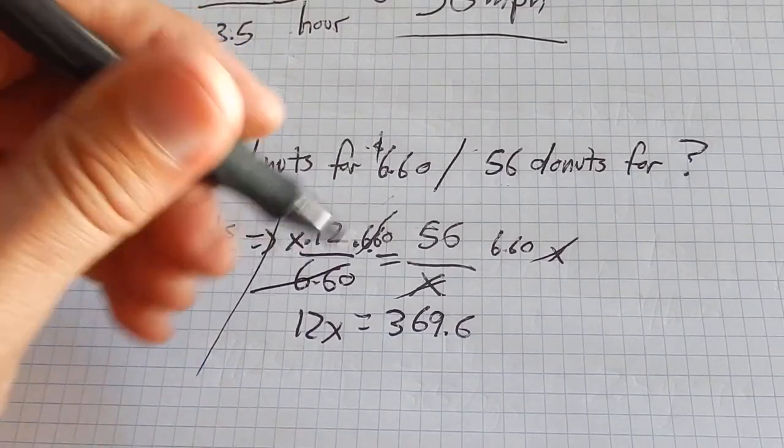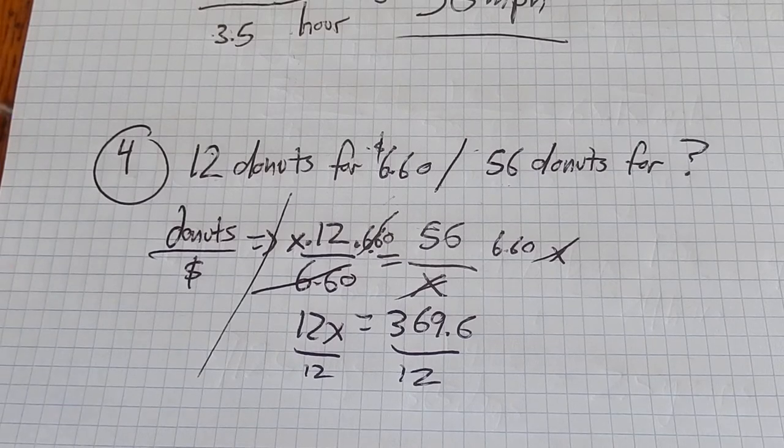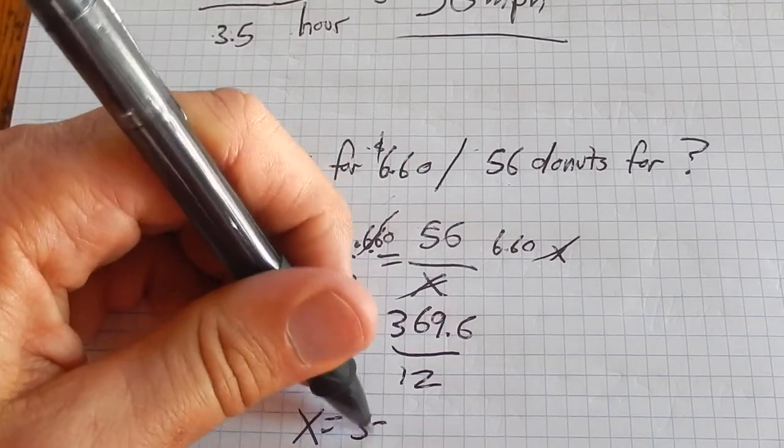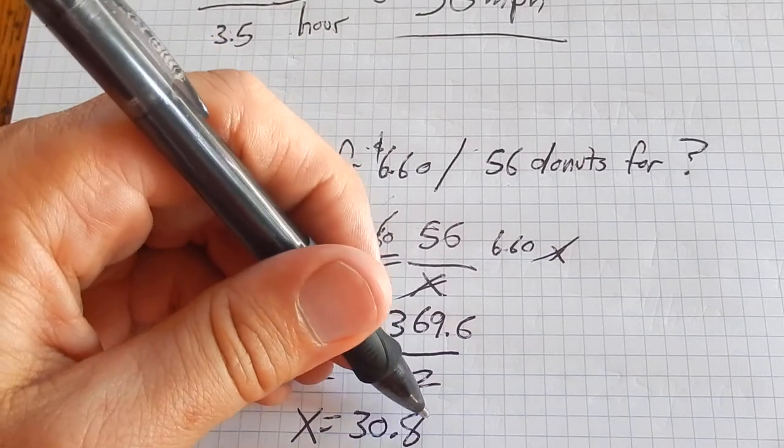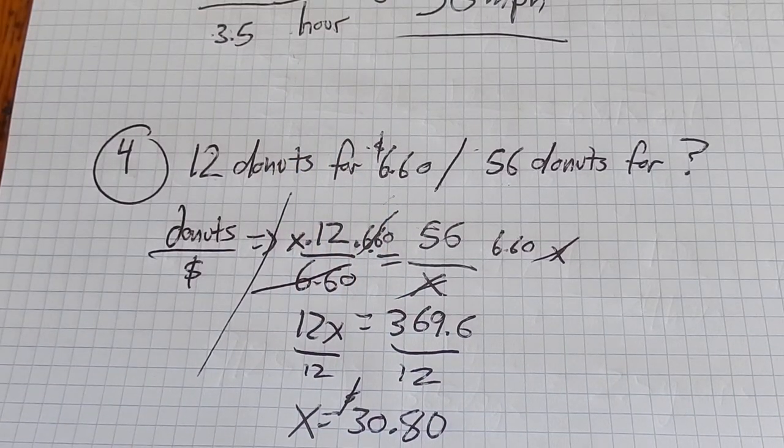And now it's a little algebra problem to solve. Divide both sides by 12. And it looks like x is $30.80. Payout bet.